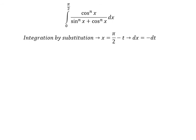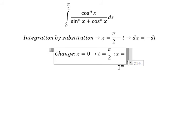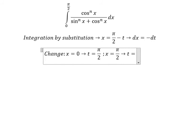Later that, we need to change. If x equals 0, so t should be π/2. If x equals π/2, so t should be 0.